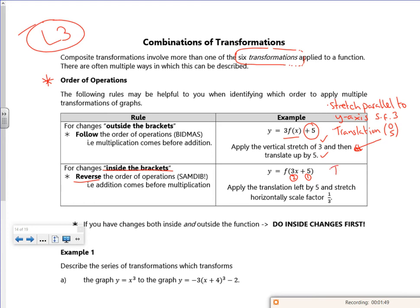It's a translation (-5, 0). And the three is a stretch parallel to the x-axis, scale factor a third. I'm cramming three times as much graph into the same area. So I've got to plot it at a third of the x value.